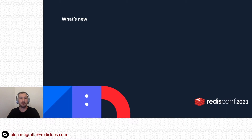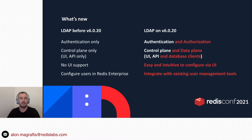So, what's new? LDAP integration existed for a long time on Redis Enterprise, but let's compare what we had before version 6.20 to what we have with it. Before 6.20, LDAP was used for authentication only. Now, LDAP is used for authentication and for authorization. Before 6.20, LDAP was used only to access the management UI console and for API calls. Now, it is used for the management layer as well as for data access using any Redis clients to connect to the database. With 6.20, we added new easy and intuitive configuration pages on the UI console. And while before you had to add and configure your LDAP users on Redis Enterprise, now there is no need for that — Redis Enterprise just integrates with your existing user management tool.